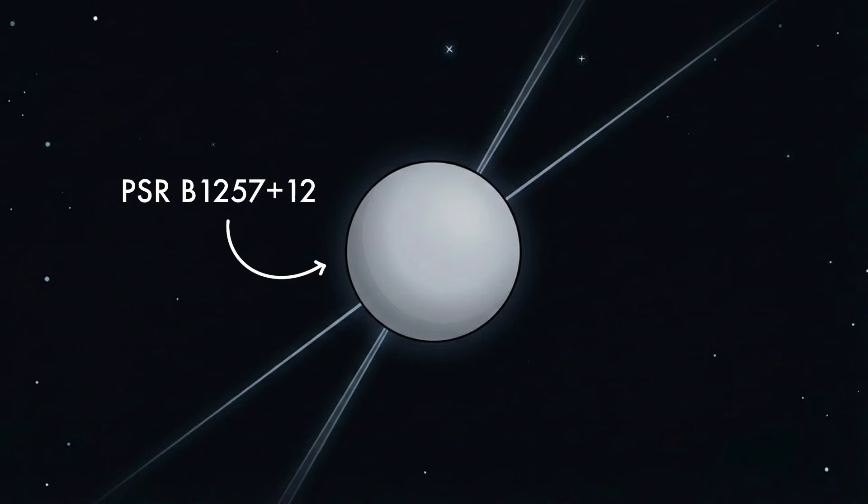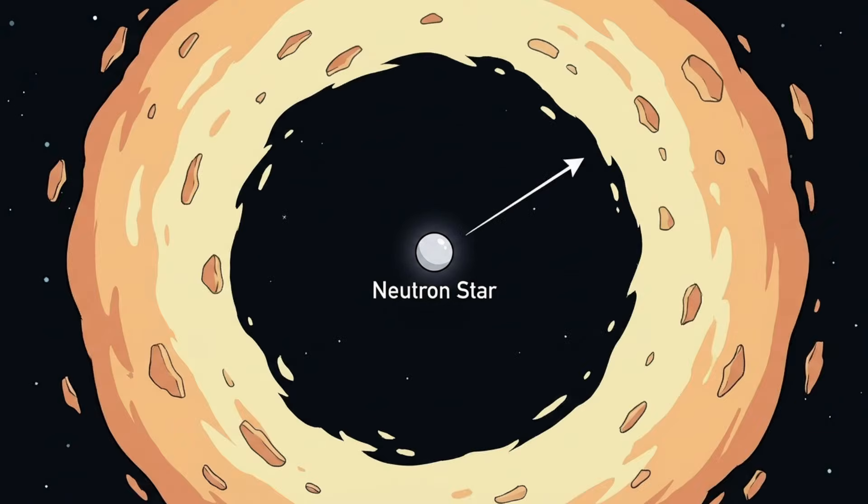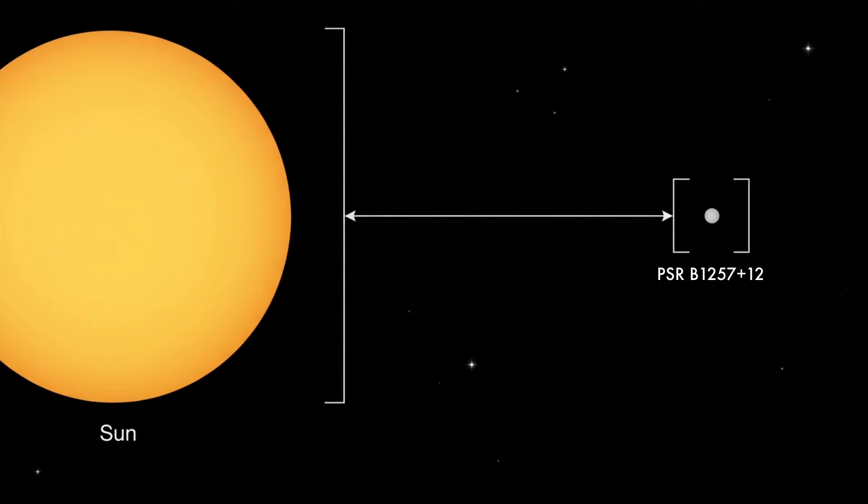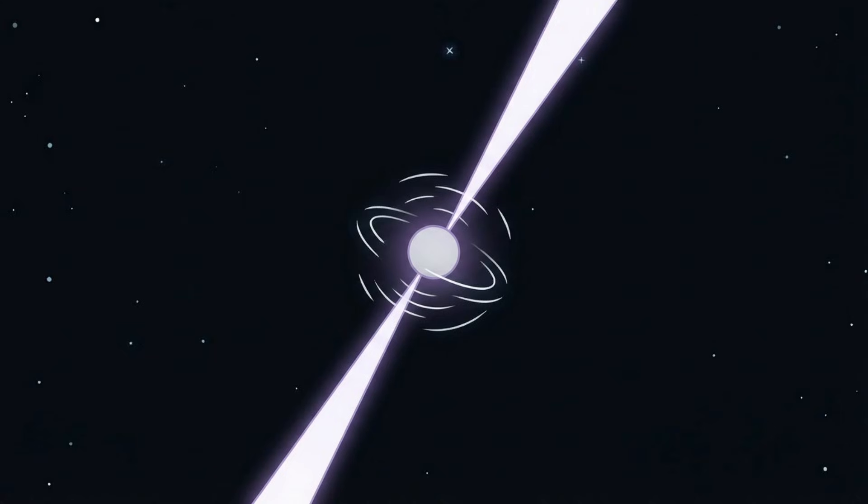PSR B1257-12b is a neutron star, the collapsed core left behind after a massive star exploded as a supernova. This object packs more mass than the Sun into a sphere roughly 20 kilometers wide. It spins hundreds of times per second and releases intense beams of radiation.